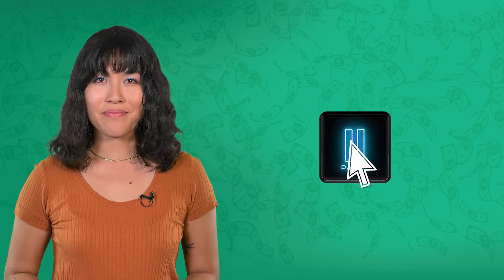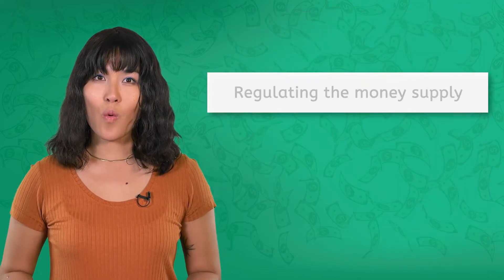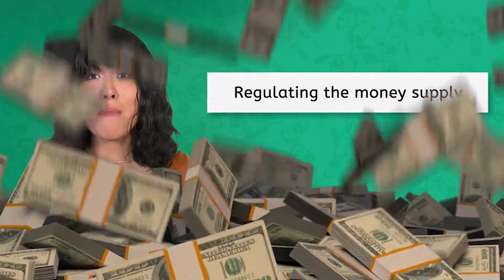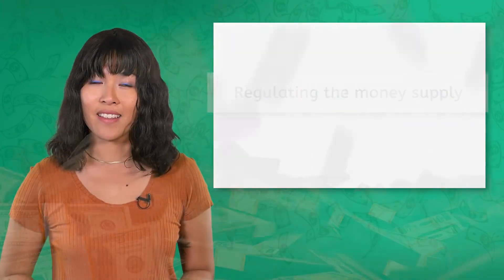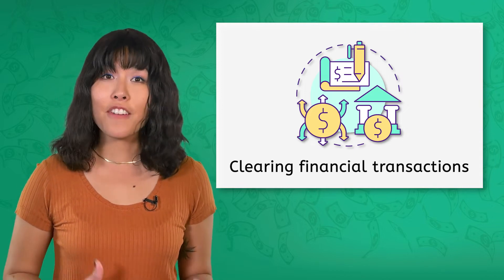You might want to take a moment and get your PDF — there's a graphic organizer that you can fill out as we go along. The Federal Reserve is the central bank of the United States. In the US, the Fed regulates the money supply and clears financial transactions between member banks. Regulating the money supply means they can control the amount of money circulating in our economy.